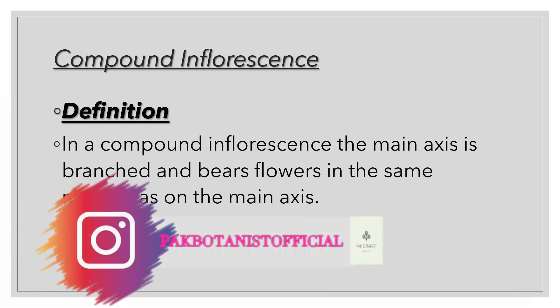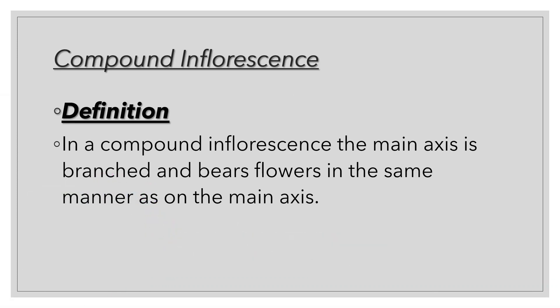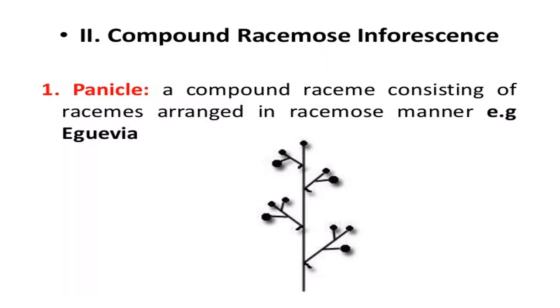Compound inflorescence is where the main axis branches in the same manner as the lateral branches, and flowers are created in the same manner throughout. The first type of compound inflorescence is compound racemose inflorescence. As the name shows, compound racemose inflorescence is a complex of racemose inflorescences — a raceme consisting of racemes arranged in a racemose manner.